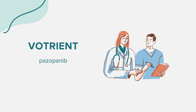It's essential to ensure you're not pregnant before starting this treatment, as Votrient can harm an unborn baby. Effective birth control should be used during treatment and for at least 2 weeks after the last dose. Men with pregnant partners or partners who could become pregnant should use condoms during treatment and for at least 2 weeks after the final dose. Breastfeeding is not recommended while using Votrient and for at least 2 weeks after the last dose.